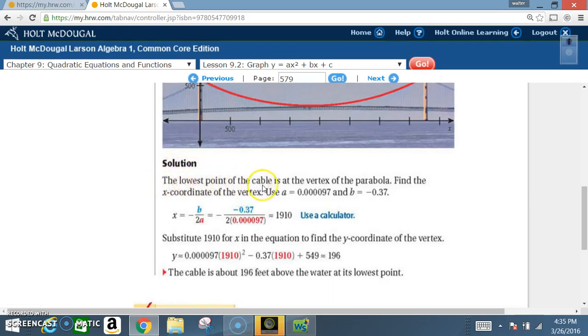Solution: The lowest point of the cable is at the vertex of the parabola. This is our parabola, so the vertex is in here somewhere, that's our lowest point because it opens upward. Find the x-coordinate of the vertex. Use a equals 0.0000097 and b equals negative 0.37. We use the axis of symmetry equation to find the x-value of the vertex: x equals negative b over 2a. We plug in the corresponding values and work here first.